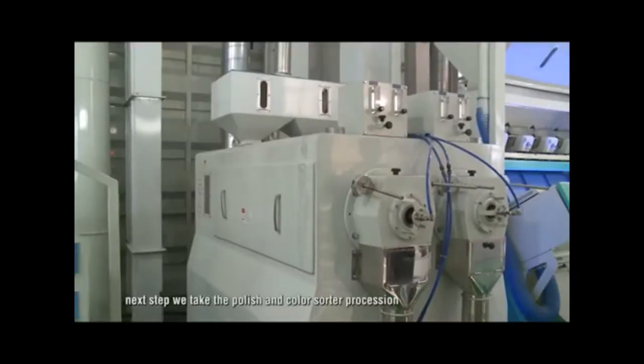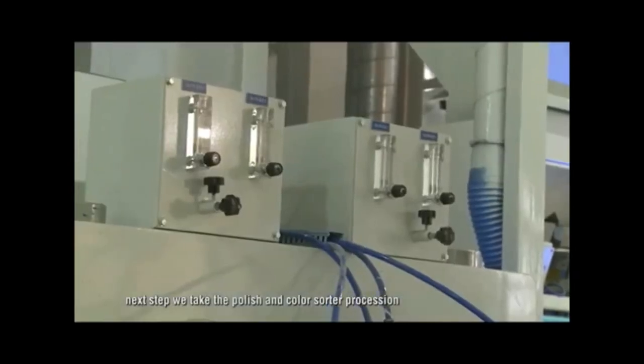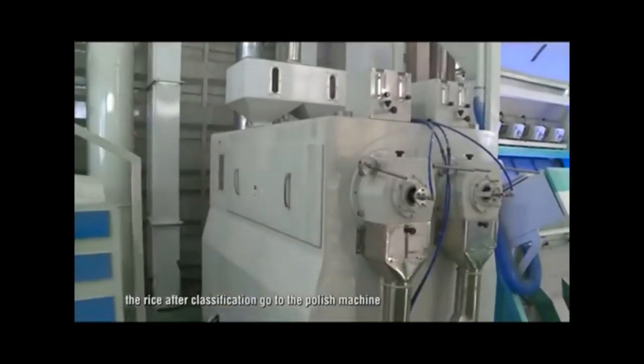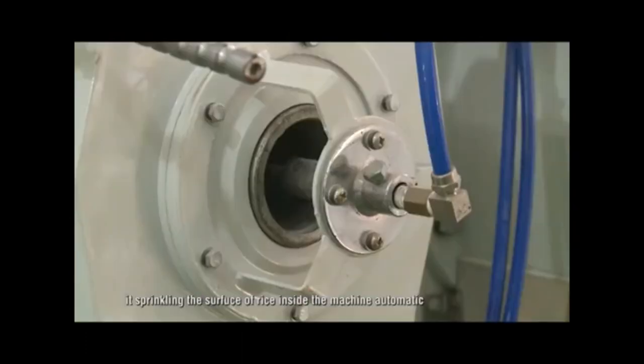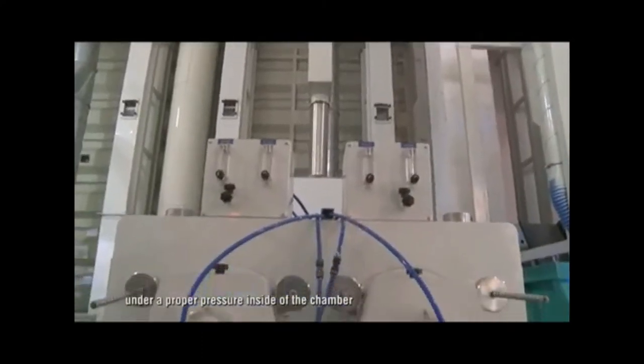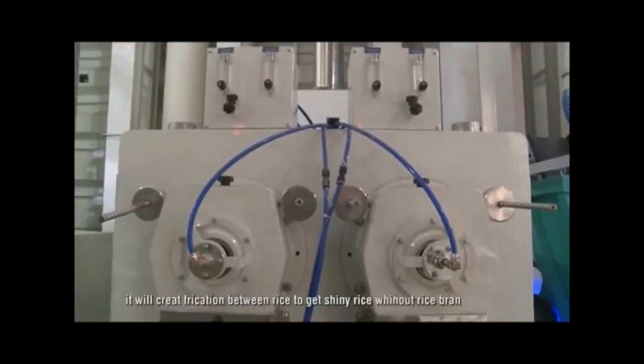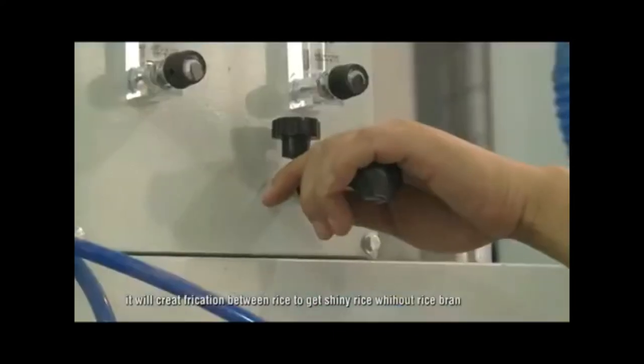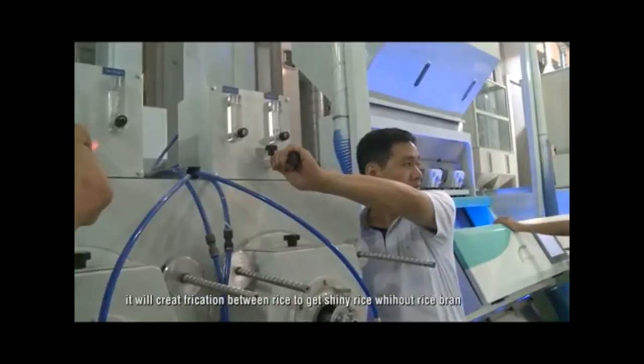Then use the wind net system to absorb the light chaff powder at the collection. Next step, we take the polish and color sorting process. The rice after classification goes to the polish machine. It sprinkles water on the surface of rice inside the machine automatically. Under proper pressure inside the chamber, it will create friction between rice to get shiny rice without rice bran.